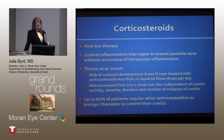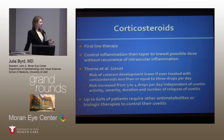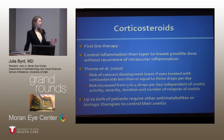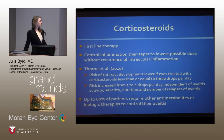A paper by Thorne and colleagues looked at what a reasonable long-term low-dose corticosteroid regimen would be in kids with uveitis, examining the risk of cataract development. They found that increasing drops per day from three to four was an independent risk factor for cataract development, independent of uveitis activity, severity, and type of corticosteroids. They concluded that three drops per day or less for a moderate course of three to five years might be appropriate. Even so, up to 60 percent of patients will require other anti-metabolites or biologic therapies to control their uveitis.